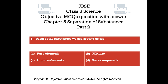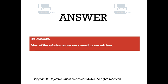Question number 1. Most of the substances we see around us are: Option A, Pure elements. Option B, Mixture. Option C, Impure elements. Option D, Pure compounds. The right answer is Option B — Mixture. Most of the substances we see around us are mixtures.